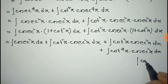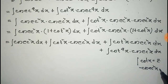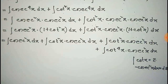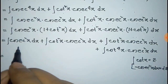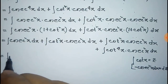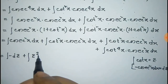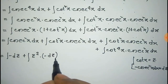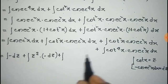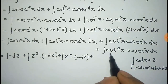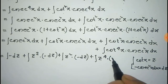Now we consider that cot x is equal to z, so the derivative of cot x, that is minus cosec square x dx, equals dz. Substituting this condition, cosec square x dx becomes minus dz, cot square x cosec square x dx becomes z square into minus dz, and the cot square x cosec square x term also gives z square into minus dz, and z to the power 4 into minus dz.